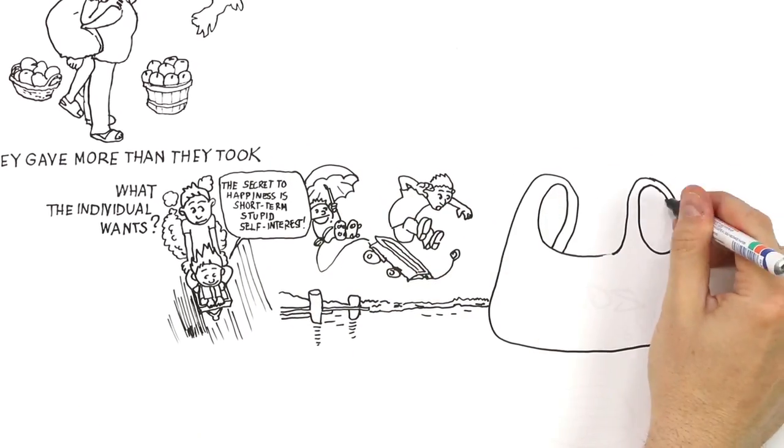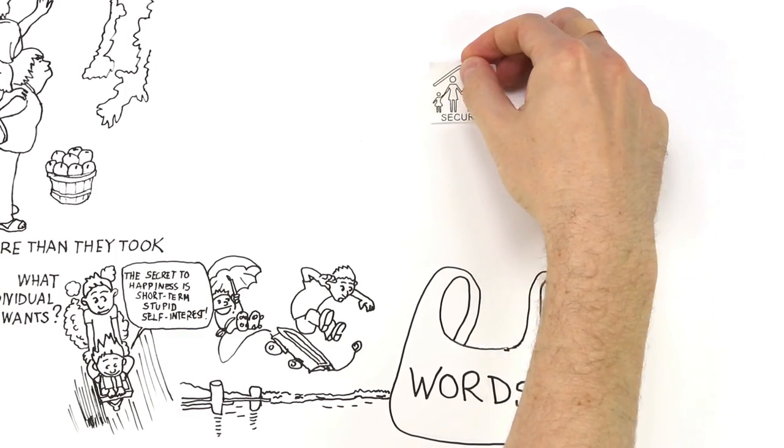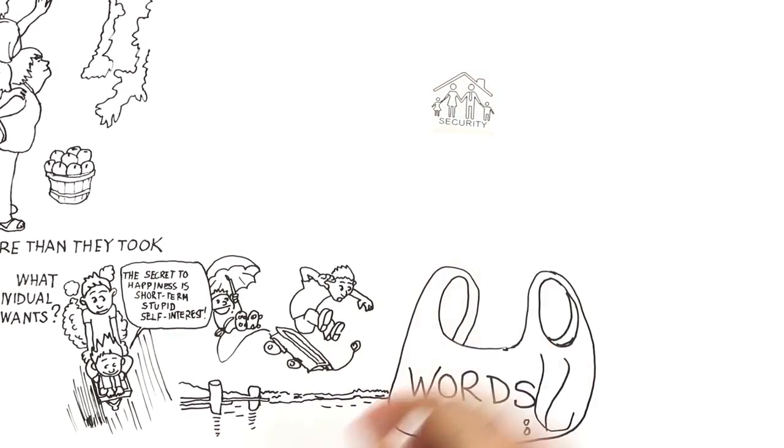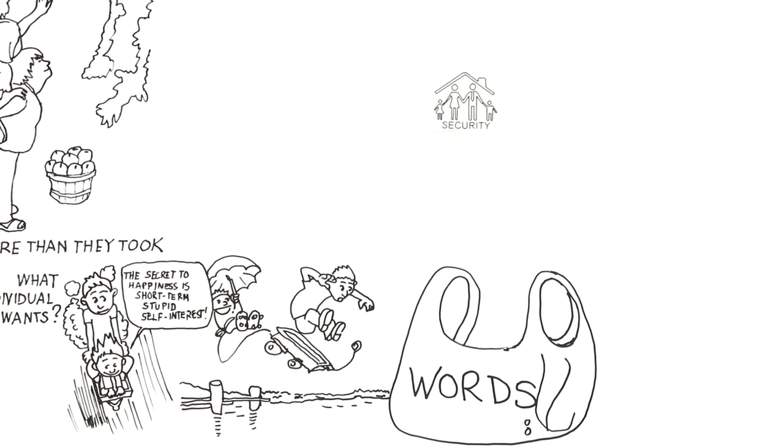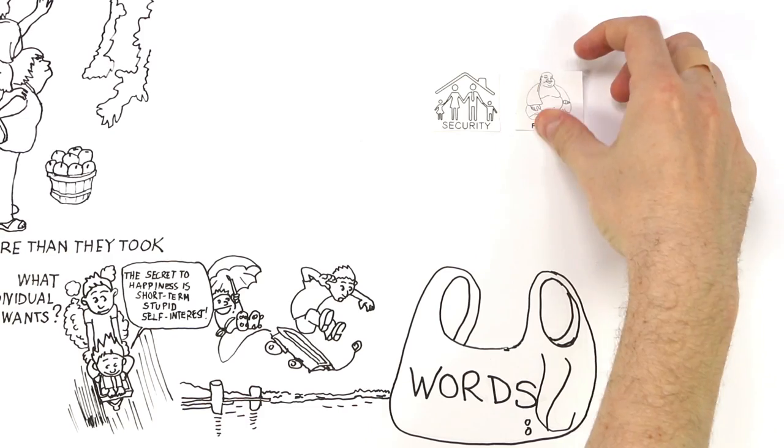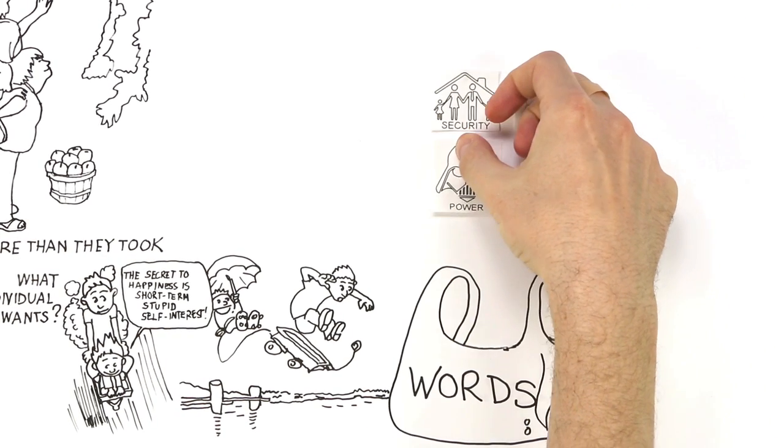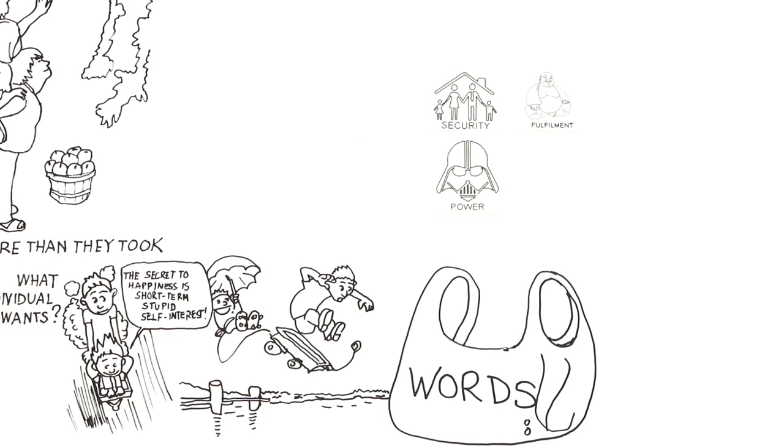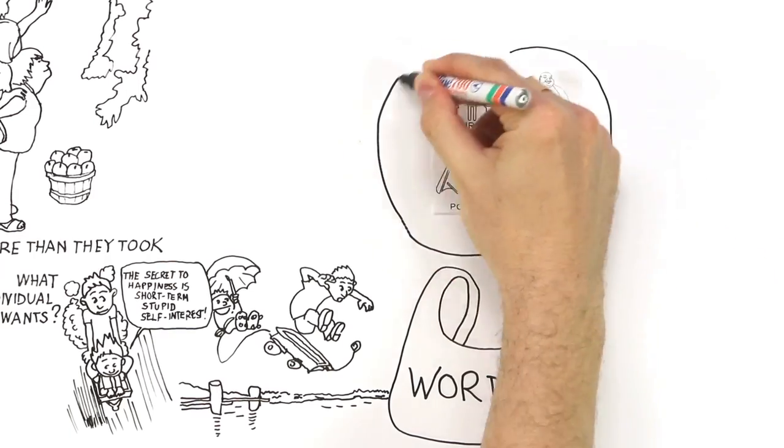When you ask people what they want out of life, you always get a bag of words that have got four themes in them. Firstly, there'll be a theme around security. It's important to feed my family, to have a roof over my head, to pay the bond. And then there's a theme around fulfillment. It's important to have a sense of learning and challenge. There'll also be a theme around significance or power, that it's important for me to be recognized by others. And there'll be a theme around harmony. Security, fulfillment, power, and harmony.